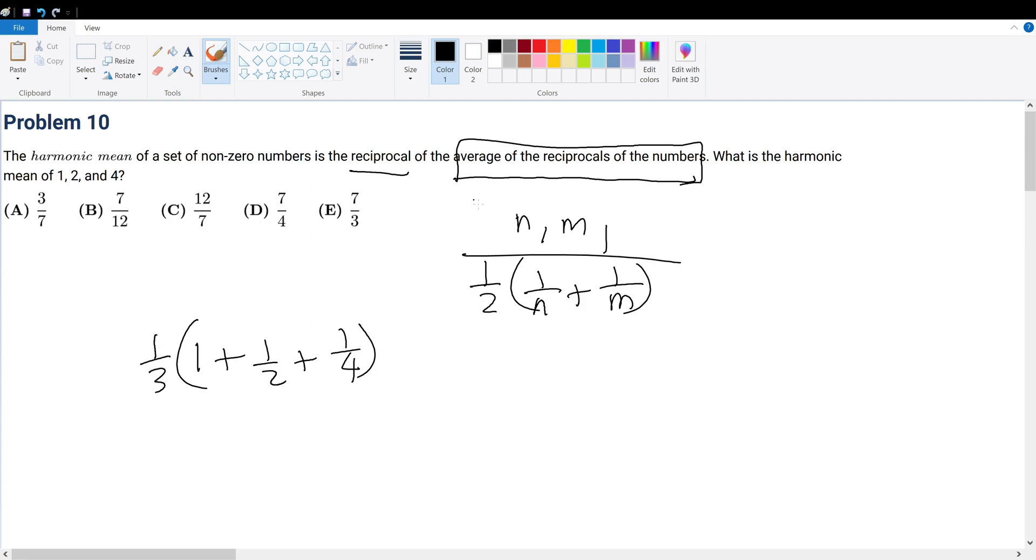That gives us the first part, the average of the reciprocals of the numbers, but let's just first write everything out. This is the part where we're finding the average, but then we need to take the reciprocal of that, so it's 1 over. And then that would be this entire expression, would be the definition of a harmonic mean, so then we just have to evaluate and we are done.